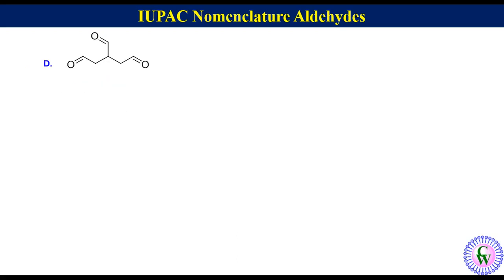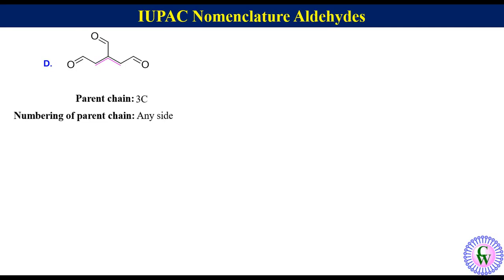Compound D — in this molecule there are 3 CHO groups. So the parent chain will be the chain with 3 carbon atoms and the aldehyde carbons will not be included. Numbering of the parent chain: we can number from any side as all directions give the same result, so the numbering will be 1, 2, and 3.